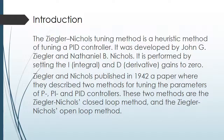The Ziegler-Nichols tuning method is a heuristic method of tuning a PID controller. It was developed by John G. Ziegler and Nathaniel B. Nichols. It is performed by setting the I, which is the integral, and the D, which is the derivative, gains to zero. Ziegler and Nichols published in 1942 a paper describing two methods for tuning the parameters of P, PI, and PID controllers: the Ziegler-Nichols closed-loop method and the Ziegler-Nichols open-loop method.